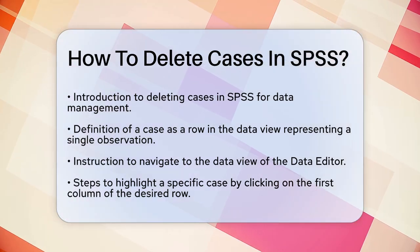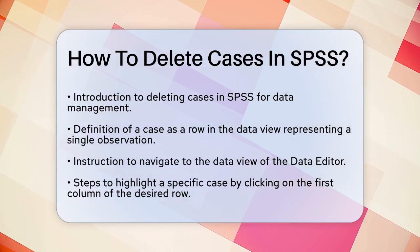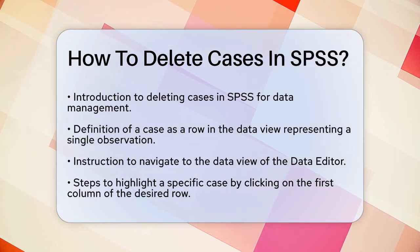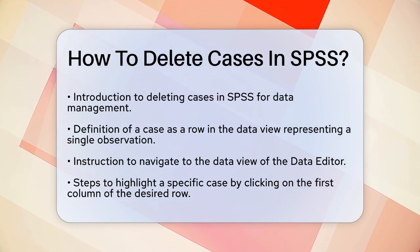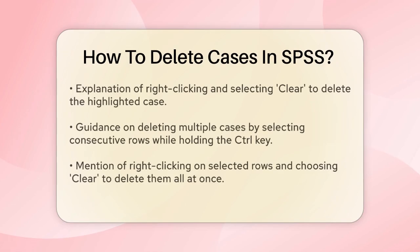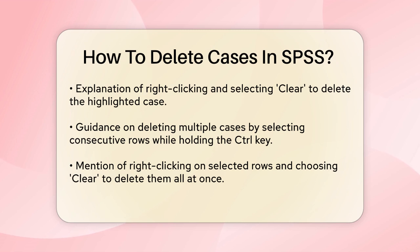To delete a specific case, place your cursor on the first column of the row you want to delete. Click on the number in that column to highlight the entire row. Once the row is highlighted, right-click on it and select Clear. This action will delete the entire row or case from your data set.